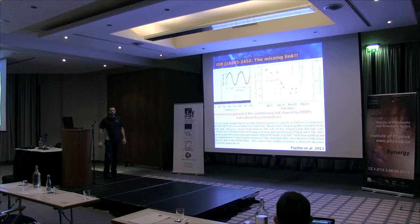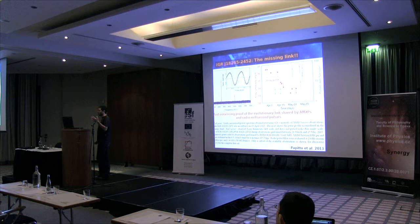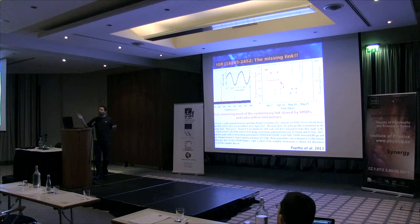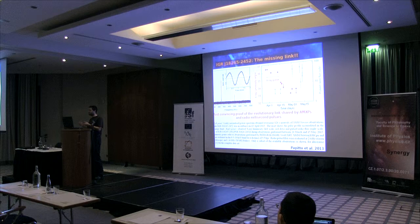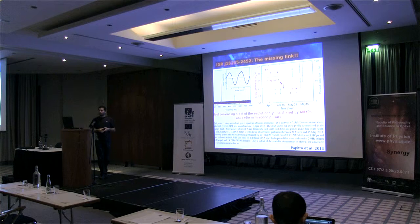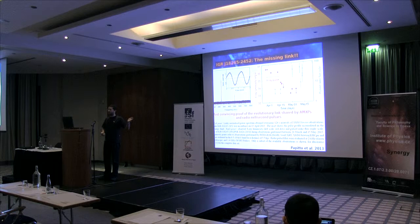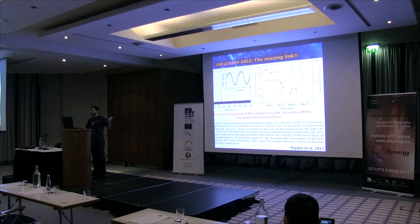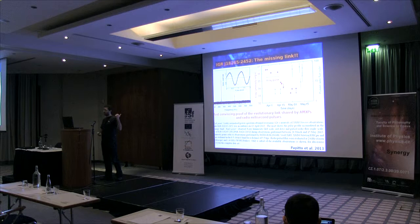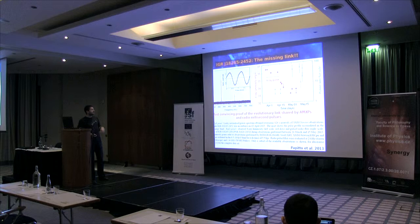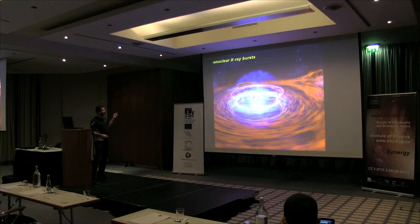The second highlight I want to mention is a discovery from a few months ago: a source in what I think is NGC 6440, called IGR something, which is a missing link. The prediction since the first millisecond radio pulsar was that a slow radio pulsar with a magnetic field of 10^12 Gauss could be spun up in a binary system through disk accretion, and that we should see the transition between X-ray pulsars and radio pulsars. That transition had not been seen until just a couple of months ago, so check it out.